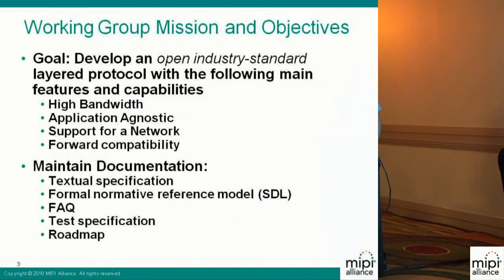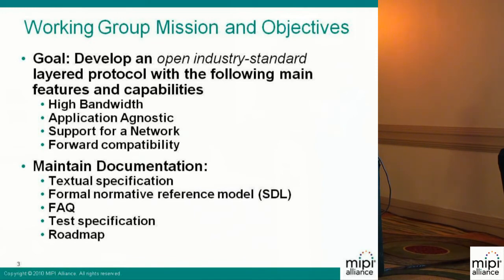Who are we and what are we doing? The goal of the UniPro working group is to develop an open industry standard for a layered protocol. The main features we support are, of course, high bandwidth — one important thing. Another very important thing is that it has to be application agnostic; we don't care about the type of data and can support several applications. We give support for networking so that each device can communicate with other peer devices in the network. And last but not least, to enable forward compatibility.